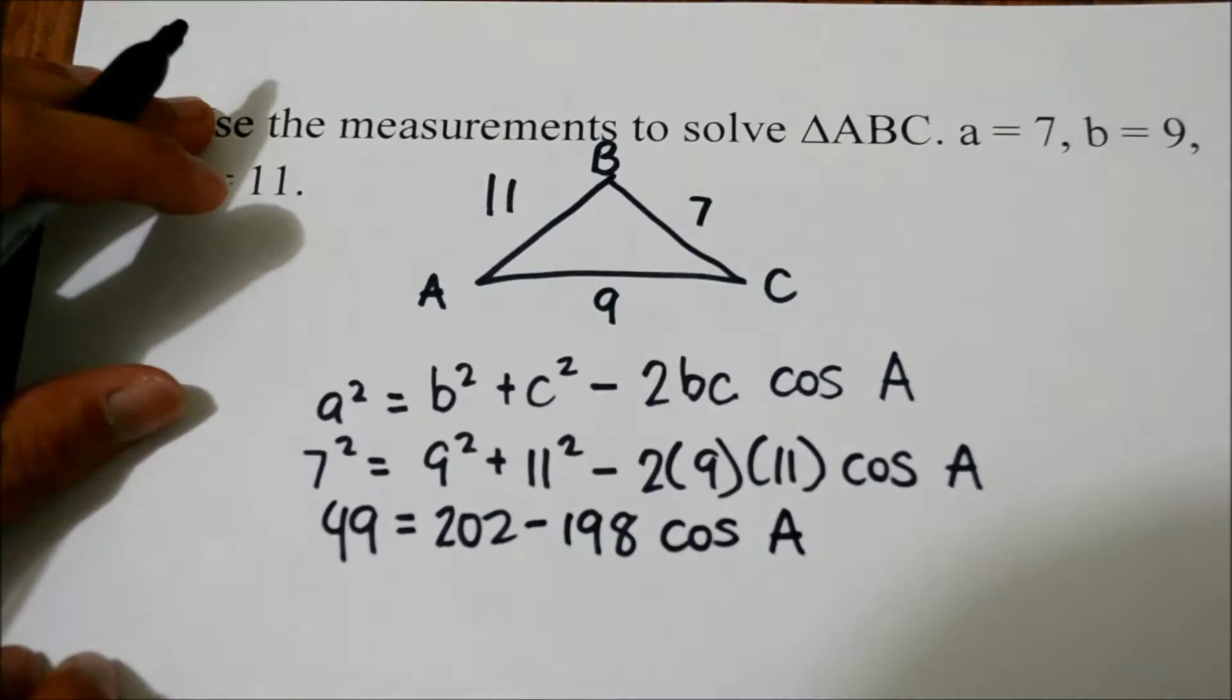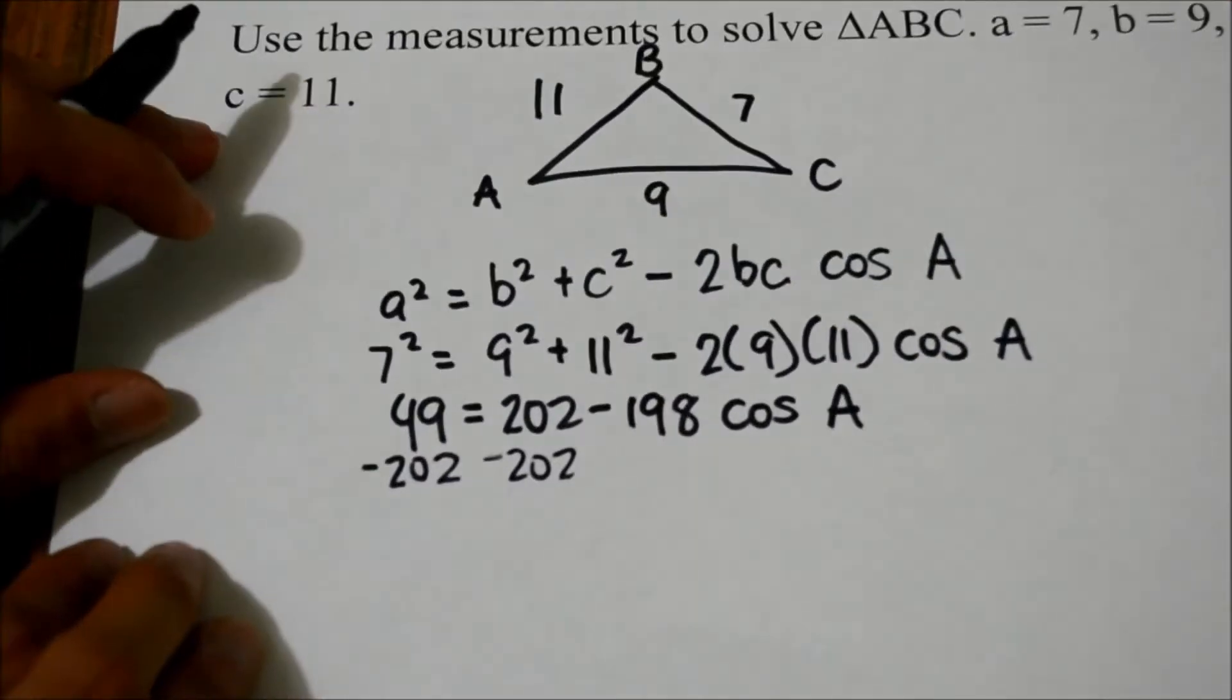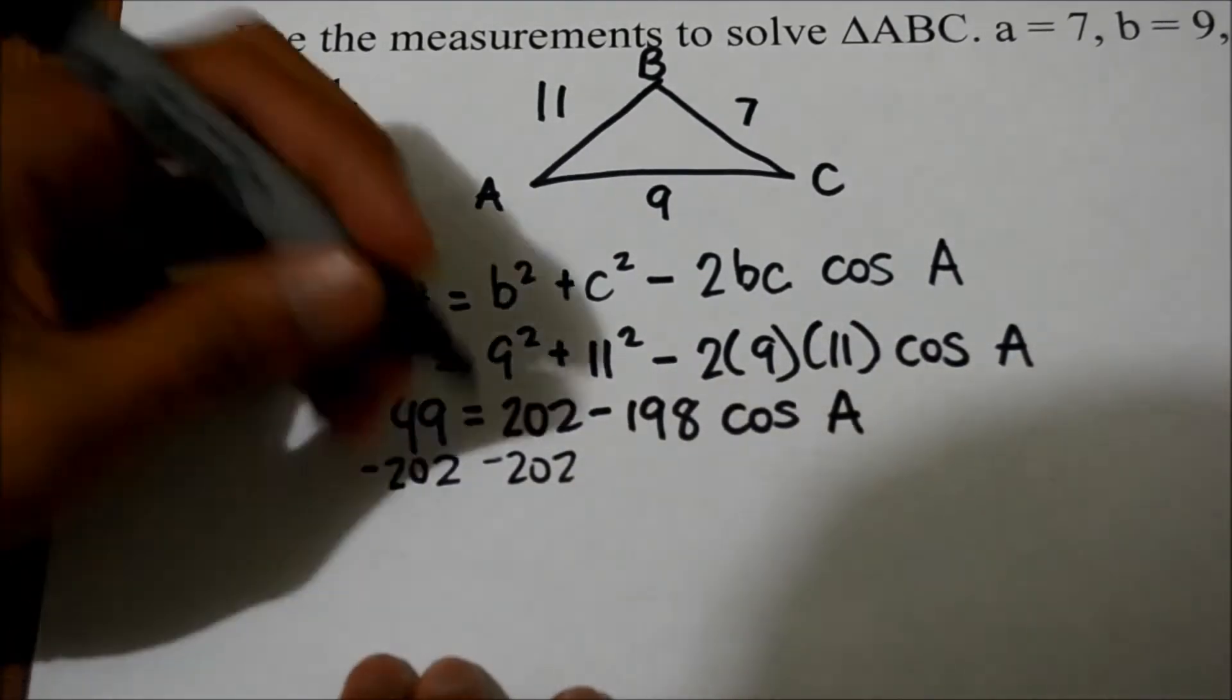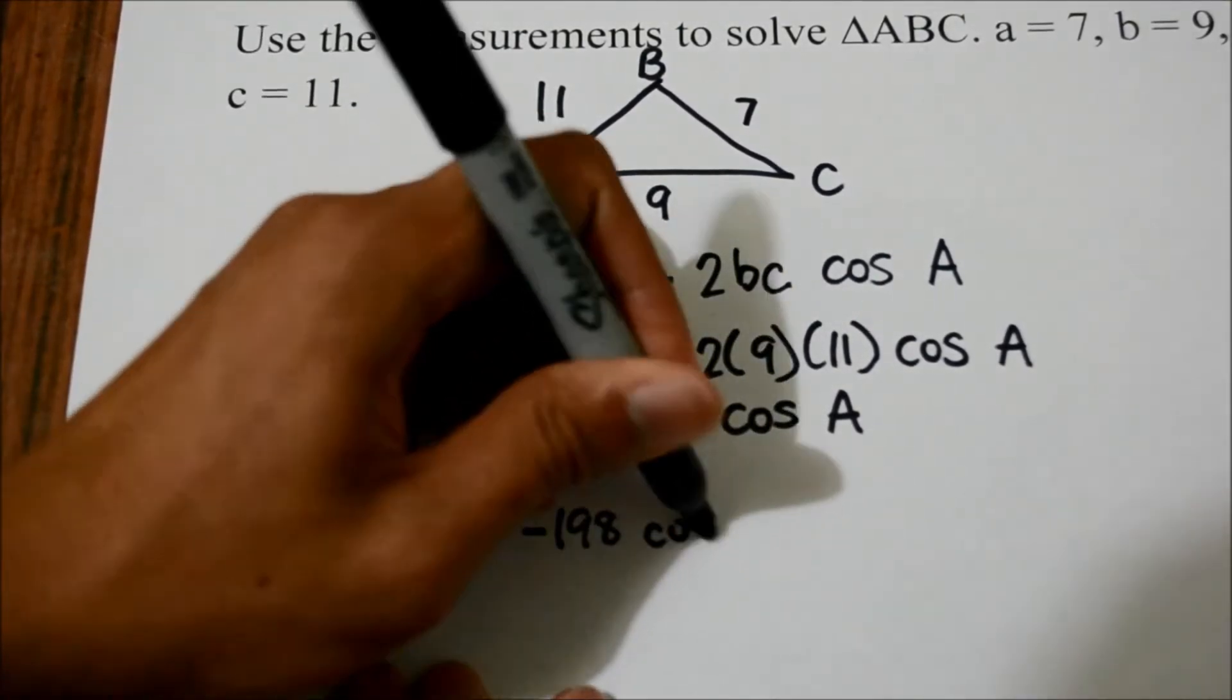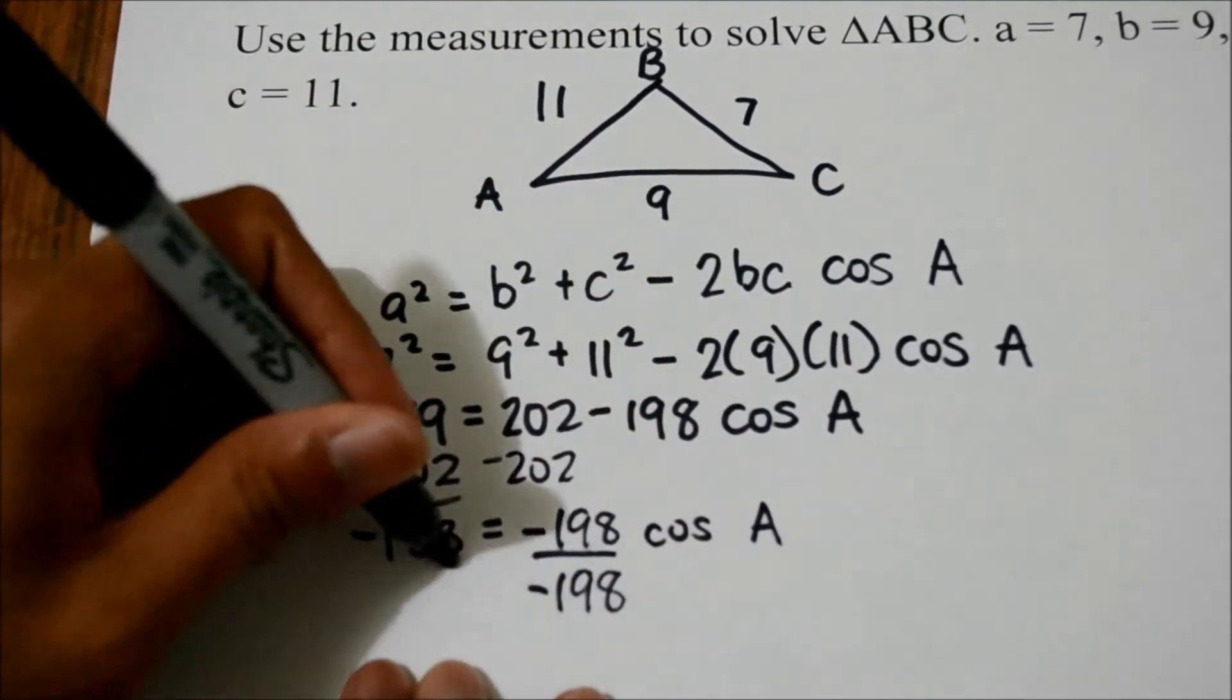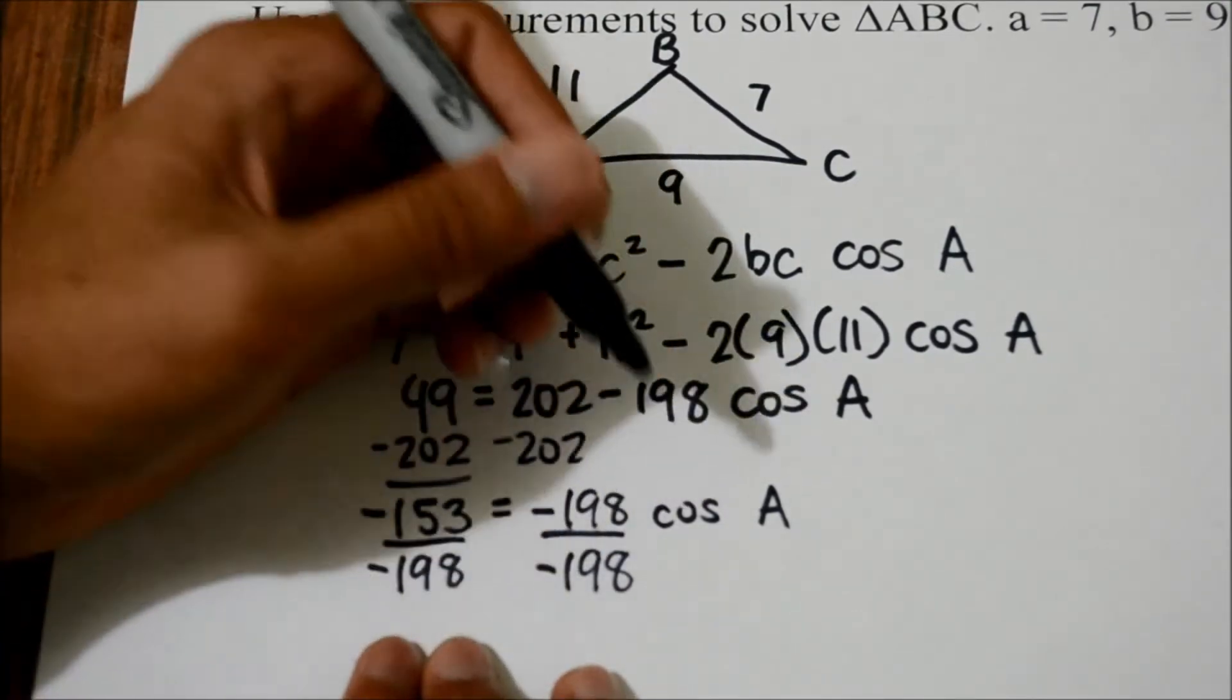We subtract 202 on both sides, which on the left side we will have negative 153 before dividing negative 198 on both sides again just to isolate cosine of A.